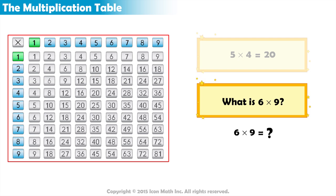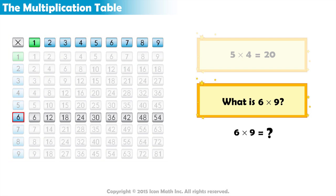Here is the Multiplication Table. Start from row 6 and move across 9 columns. What number are we at?